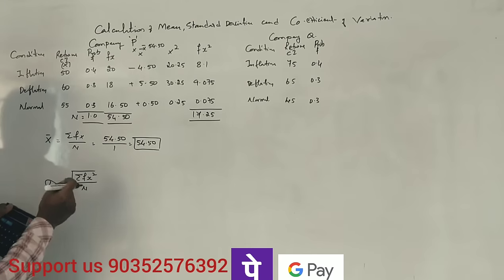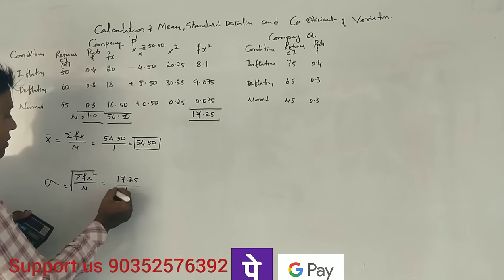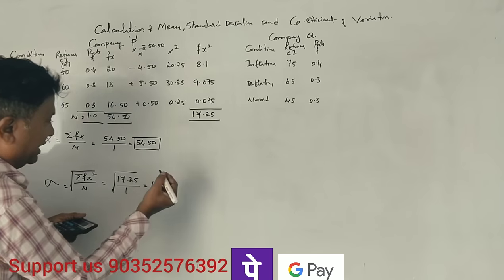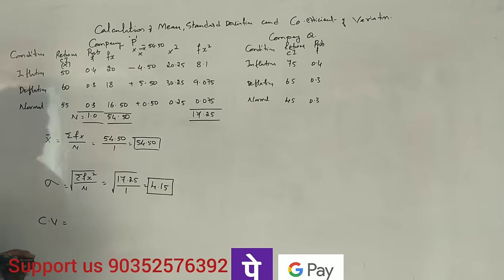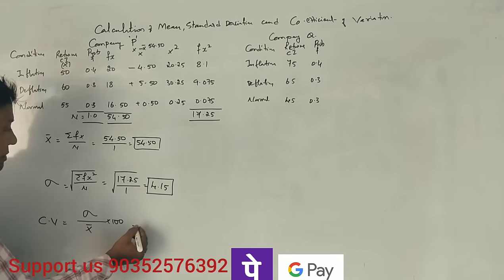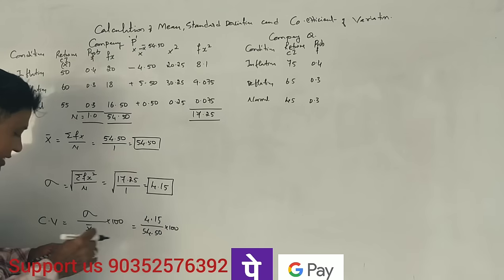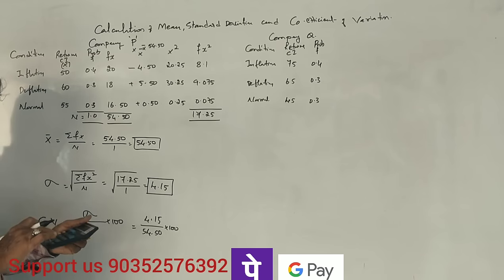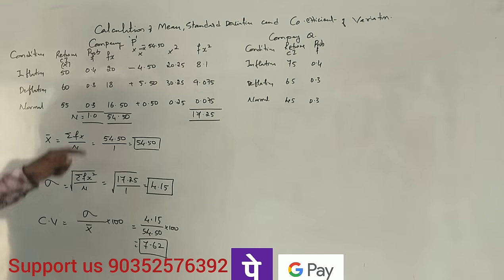Standard deviation equals square root of 17.25 divided by 1, giving approximately 4.15. The coefficient of variation equals standard deviation divided by mean into 100, so 4.15 divided by 54.5 into 100, which gives 7.62%. This completes the calculation for Company P.